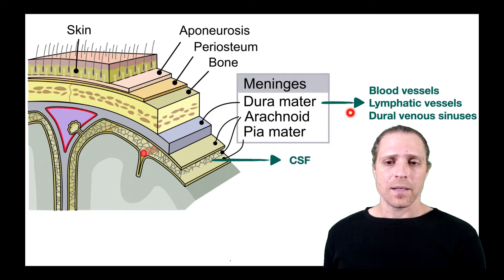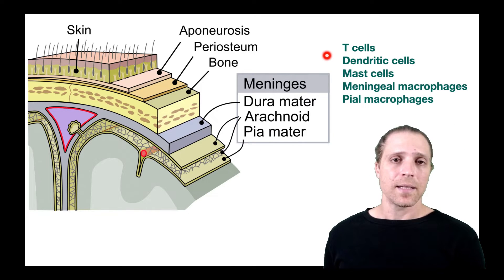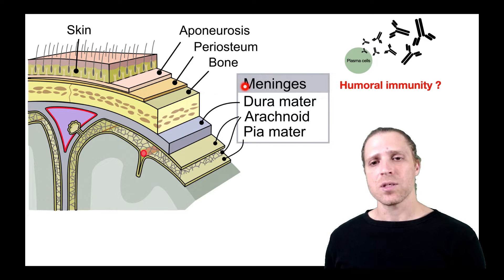There is a presence of innate immune cells as well as adaptive immune cells, and these cells include T cells, dendritic cells, mast cells, and meningeal macrophages and pial macrophages. So there is a heavy presence of immune-related cells in the meninges. However, not much was known about the presence of humoral immunity in the meninges, and specifically we talk about the cells that produce antibodies, so-called plasma cells and B cells.